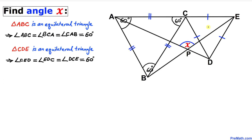Now focus on the other triangle CDE on the right-hand side. We can see that this triangle is also an equilateral triangle since all of its side lengths are equal. Therefore we conclude that the interior angles CED, EDC, and DCE are all 60 degrees each.